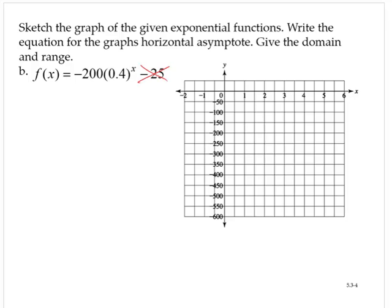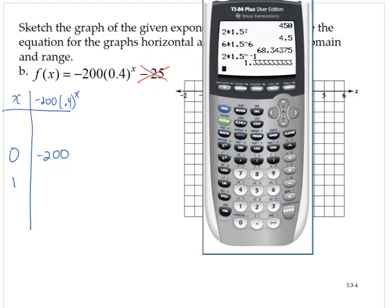Let's create a table for x versus negative 200 times 0.4 to the x. And so if we had 0, we'd have negative 200. If we would have 1, negative 200 times 0.4 is 80 if I'm not mistaken. Let me double check that. That's negative 80.